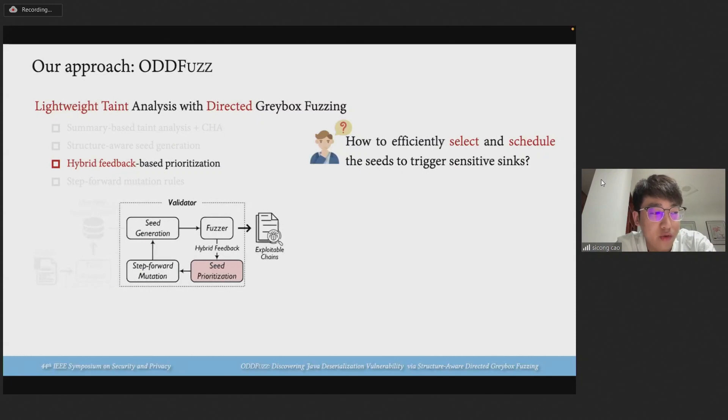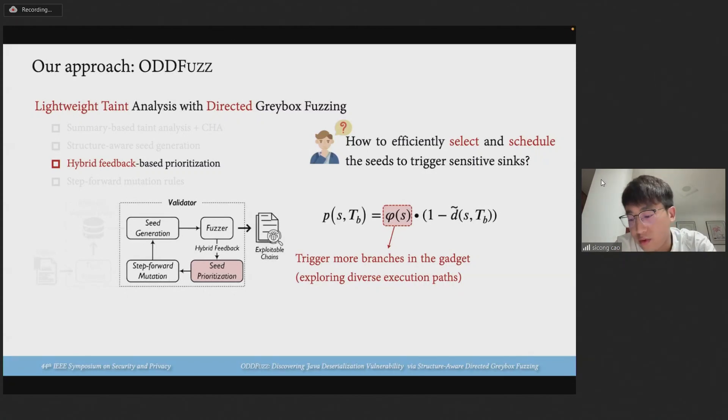Third, to efficiently select and schedule seeds to reach the security-sensitive sink, we propose a hybrid feedback-driven seed prioritization way. We take two types of feedback metrics. The first is gadget coverage. We want to use this metric to trigger more branches in the gadget and explore diverse execution paths. Similar to AFL-GO, seed distance is a normalized distance between a basic block in the execution trace of the seed and the target basic block. The main difference is that we only consider executed basic blocks within the gadgets of the target chain to compute the seed distance.